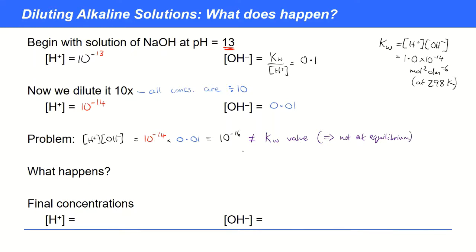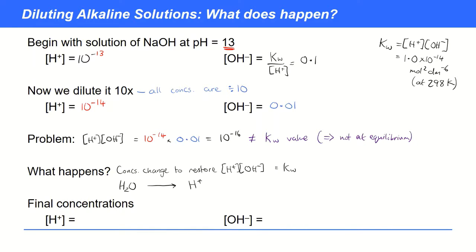Whenever you're not at equilibrium, the system is going to adjust itself in order to restore equilibrium. So concentrations are going to change to restore the product of H+ and OH- concentrations back to KW. The way it's going to happen is that water molecules are going to start to dissociate — actually two water molecules reacting with each other, but in this simplified representation — water molecules dissociate to form H+ and OH-. As they do, the concentration of H+ is going to slightly increase, and also the concentration of OH- is going to start to increase.